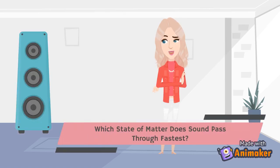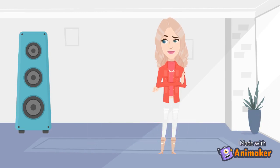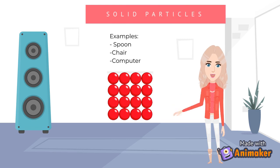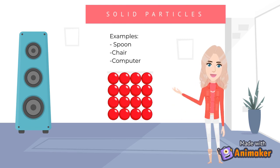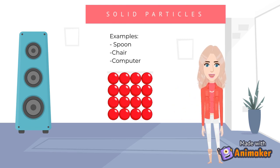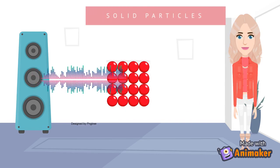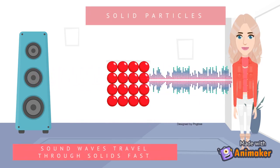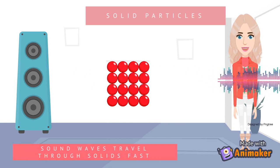Which state of matter does sound pass through fastest? Some examples of solids are chair, spoon, and computer. Sound waves travel through solids rather fast.